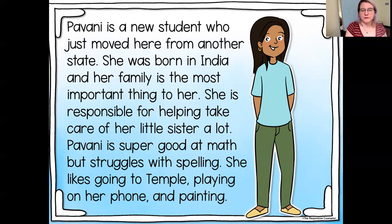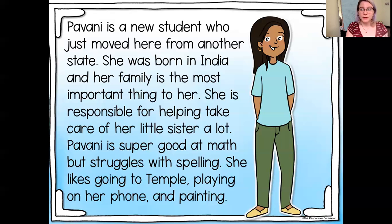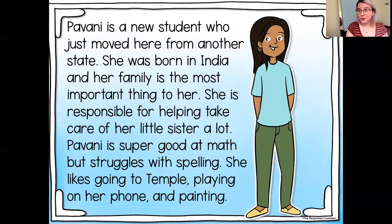Pavani is a new student who just moved here from another state. She was born in India and her family is the most important thing to her. She is responsible for helping take care of her little sister a lot. Pavani is super good at math but struggles with spelling. She likes going to temple, playing on her phone, and painting. Please write down one thing that is different between you and Pavani and one thing that you have in common. I'll give you a moment to do that. If you need more time, pause the video — there's no rush. Do this at your own pace.